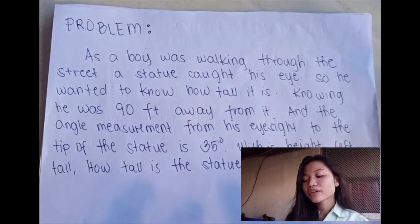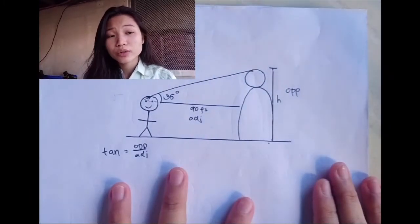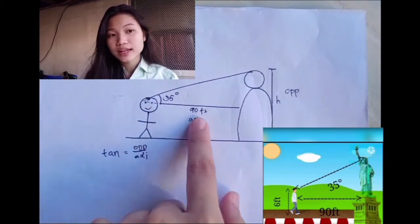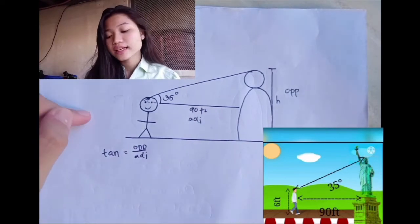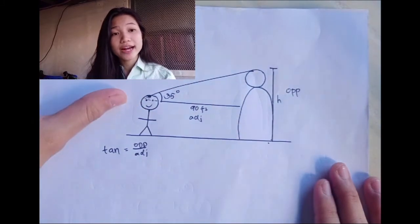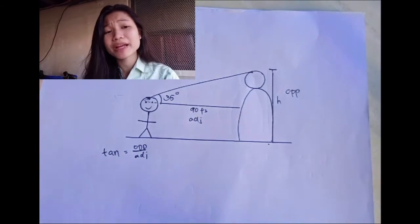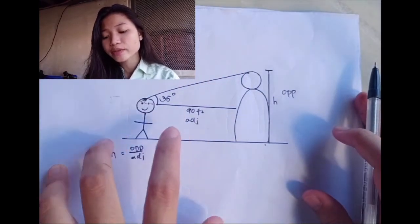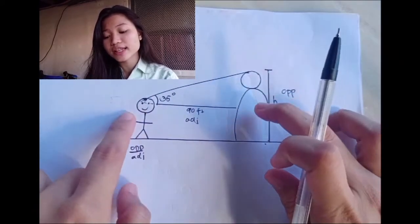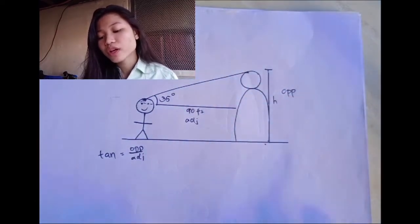We can visualize the problem with this diagram. The distance between the two objects is 90 feet and the angle of elevation is 35 degrees from the boy's eyesight to the tip of the statue. We are asked to find the height of the statue. With respect to the angle of elevation, the height will be the opposite side and the distance of 90 feet will be the adjacent side.